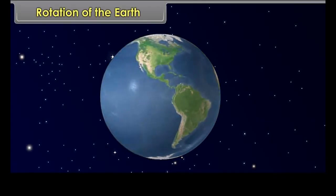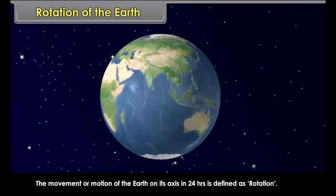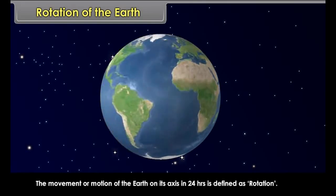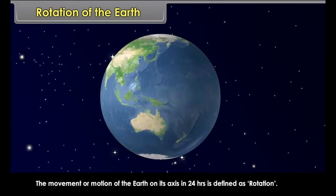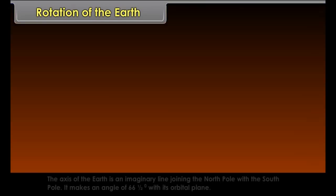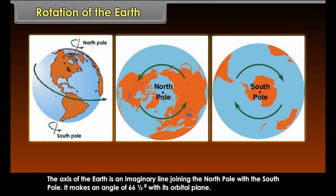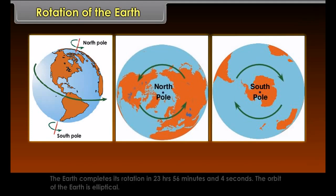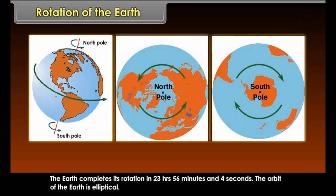Rotation of the Earth. The movement or motion of the earth on its axis in 24 hours is defined as rotation. The axis of the earth is an imaginary line joining the north pole with the south pole. It makes an angle of 66.5 degrees with its orbital plane. The earth completes its rotation in 23 hours, 56 minutes and 4 seconds. The orbit of the earth is elliptical.